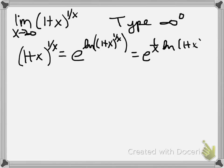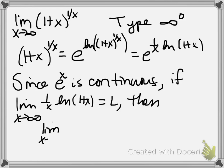Since e to the x is continuous everywhere, what we know is that if the limit as x goes to infinity of 1 over x times the natural log of 1 plus x is some number L, then the limit as x goes to infinity of e to the (1 over x times natural log of 1 plus x) is just equal to e to the L. That's a theorem about limits and continuity that you can go back and refresh yourself on in section 1.5 of the Stewart's Essential Calculus that we're using.